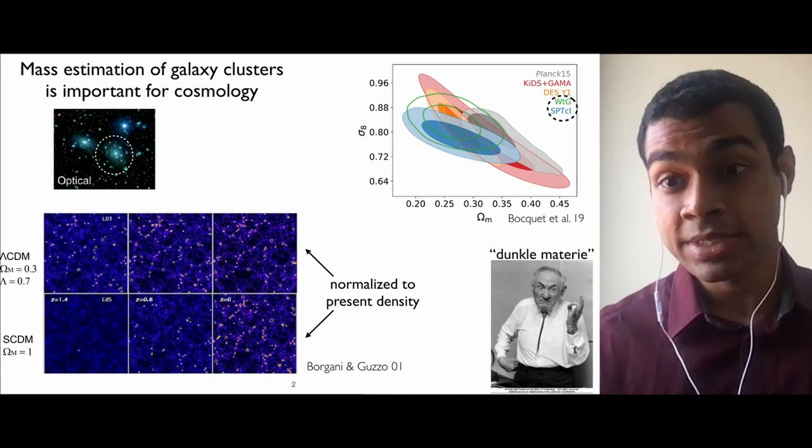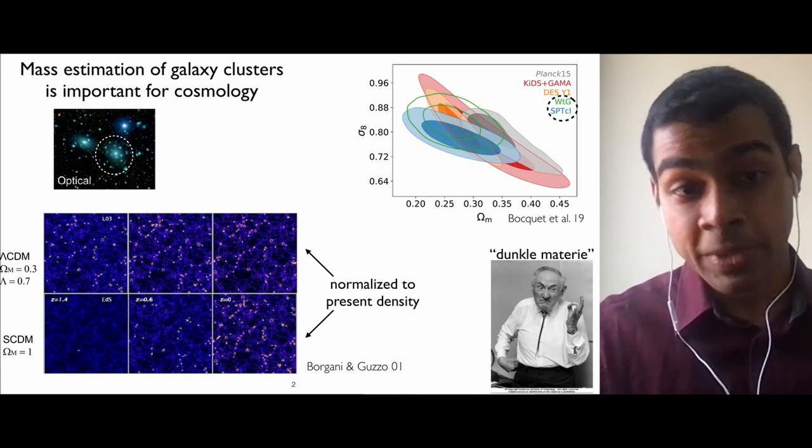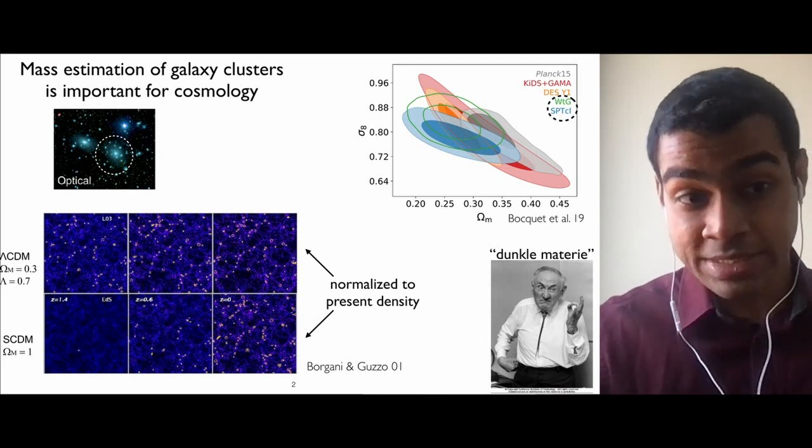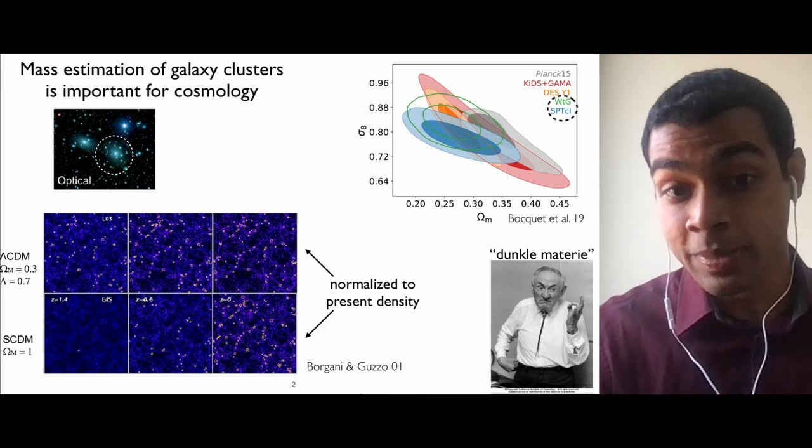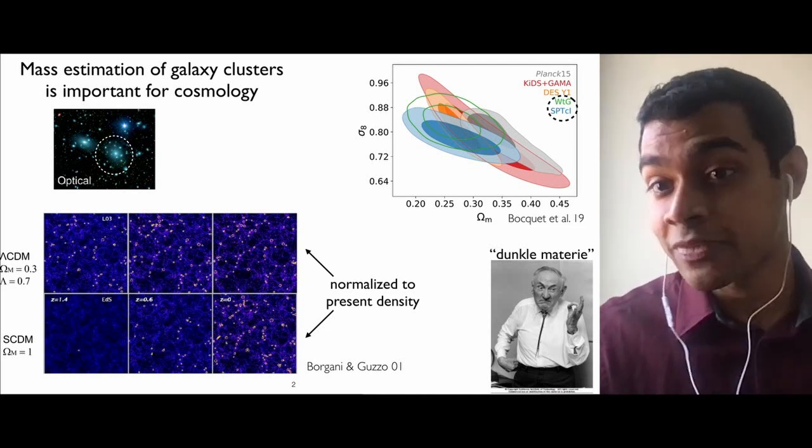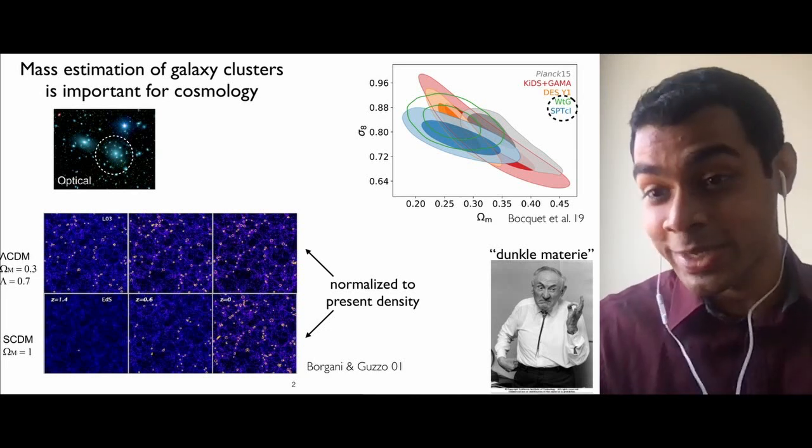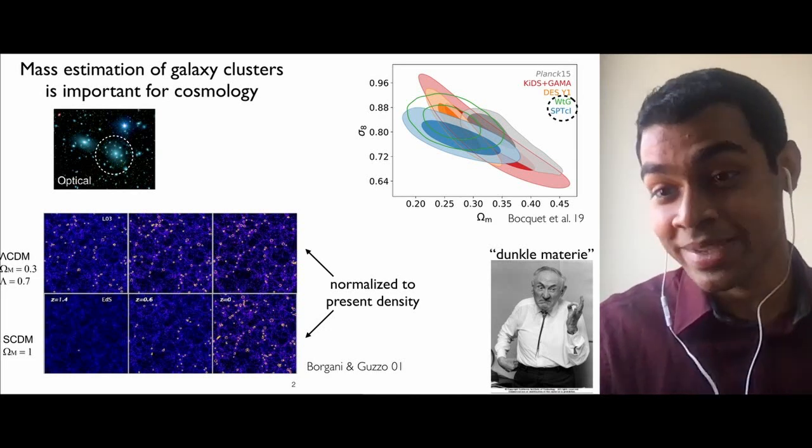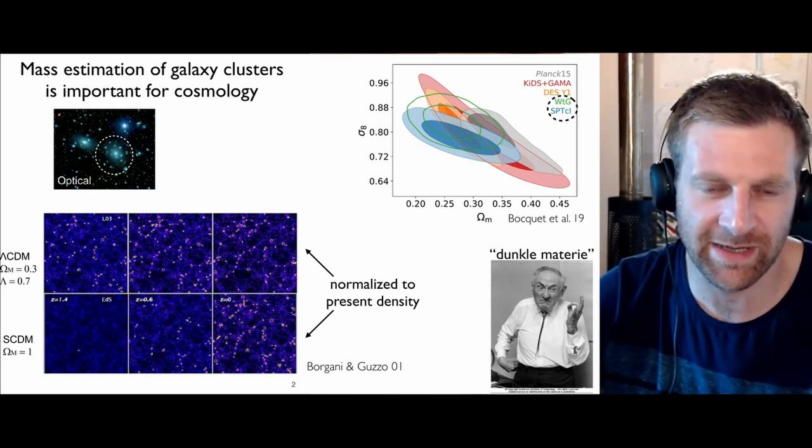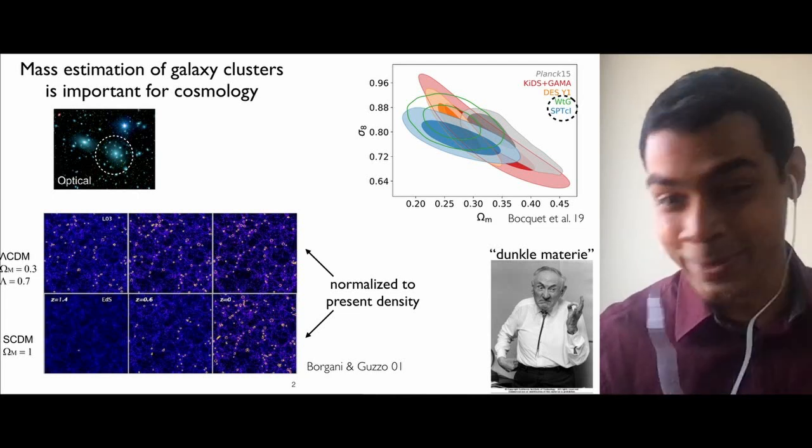So mass estimation of galaxy clusters is important for cosmology. Galaxy clusters have like 10 to hundreds of galaxies. They are like one of the biggest objects in the universe. And their abundance as a function of their mass is a very sensitive probe of cosmology. For example, I've shown two cases here where you have different cosmologies having very different cluster abundances. Here is a recent plot from one of the recent surveys, SPT, with constraints from cluster cosmology. One interesting fact is clusters were actually used for one of the first observational predictions of dark matter by Fritz Zwicky, who called it Dunkle Materiae.